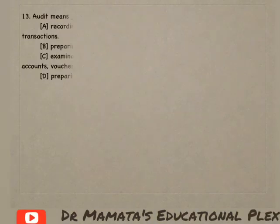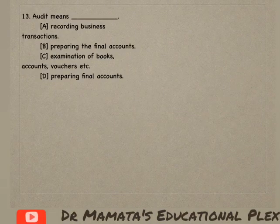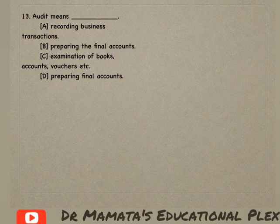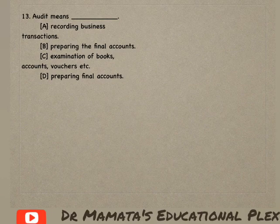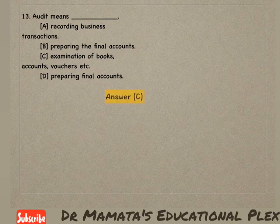Next question: Audit means — recording business transactions, preparing the final accounts, examination of books/accounts/vouchers etc., or preparing final accounts? Auditing means: if the books of final accounts are ready, to examine those final accounts. So option C, examination of books/accounts/vouchers, is the correct answer.